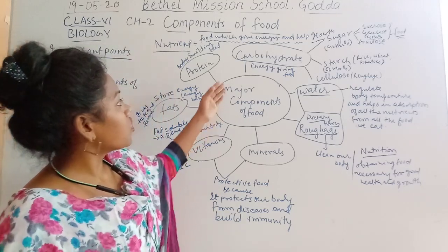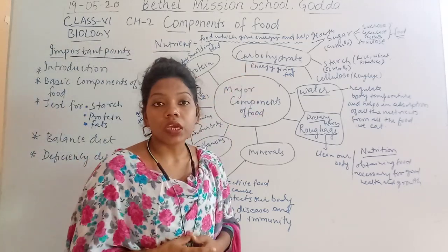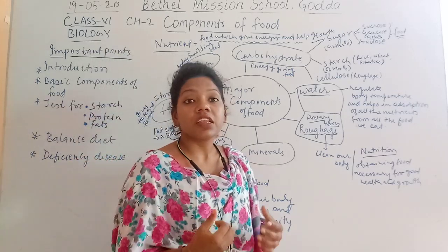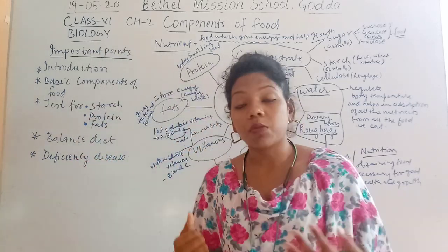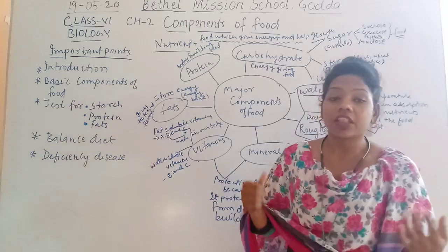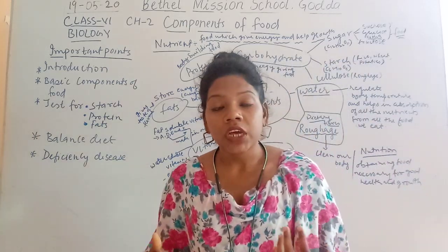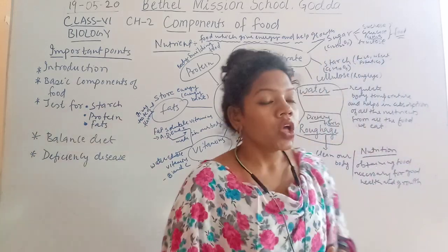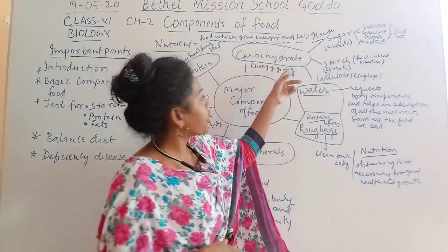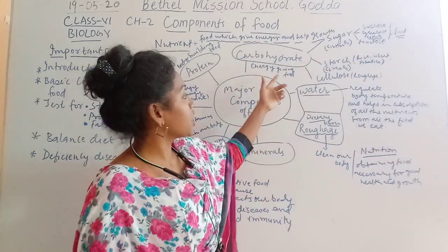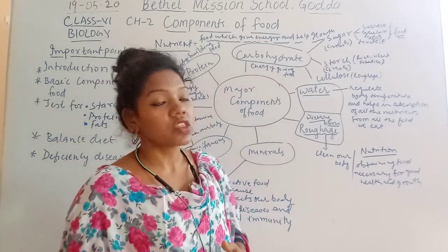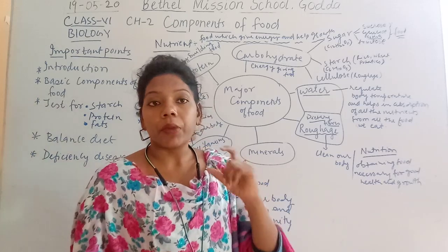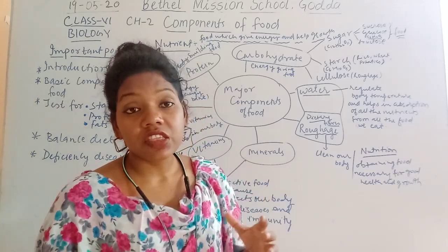First we are going to talk about carbohydrates. We eat carbohydrates in daily life in the form of rice, potato, bread, and jelly — there are various foods which come under carbohydrates. This carbohydrate is also called the energy-giving food. Why? Because it is very cheap and it is the main source of energy — we can get it anywhere.